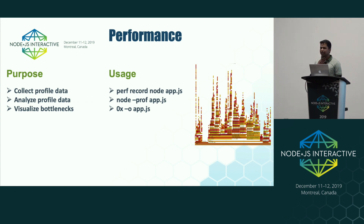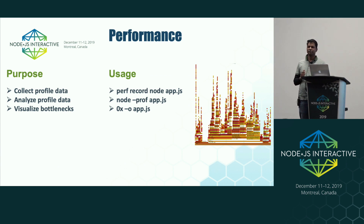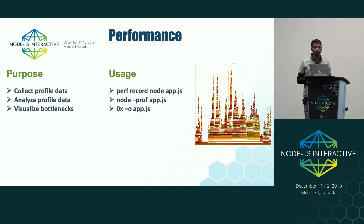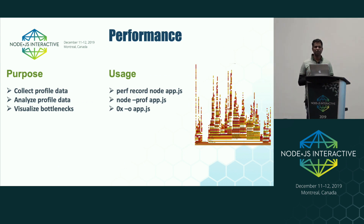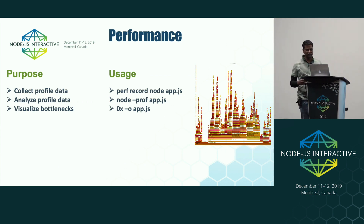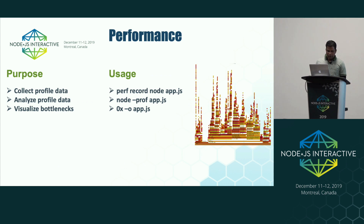Analyzing profile data involves translating CPU samples into meaningful mappings — to JavaScript objects responsible for consuming the CPU, or to symbols such as functions belonging to Node.js APIs, C++ wrappers, C runtime, or the operating system. For visualizing bottlenecks, by far the most common tool is Flame Graphs.